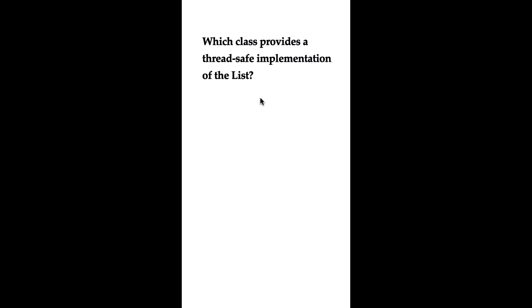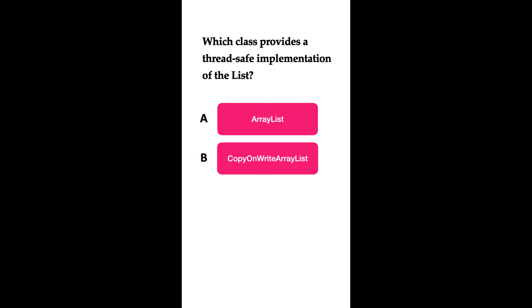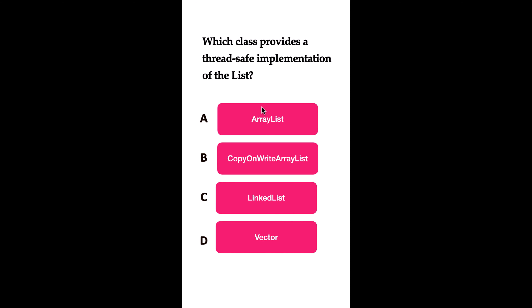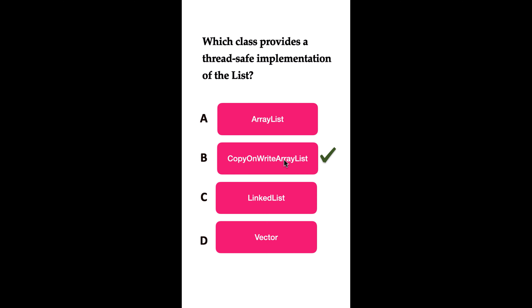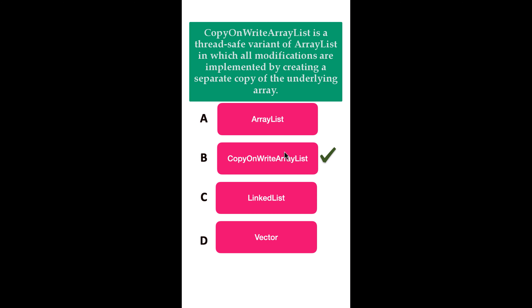Which class provides a thread-safe implementation of the List interface? Option A: ArrayList. Option B: CopyOnWriteArrayList. Option C: LinkedList. Option D: Vector. The correct answer is CopyOnWriteArrayList. CopyOnWriteArrayList is a thread-safe variant of ArrayList in which all modifications are implemented by creating a separate copy of the underlying array. It is specifically designed to provide thread-safe operations on a list without requiring external synchronization.